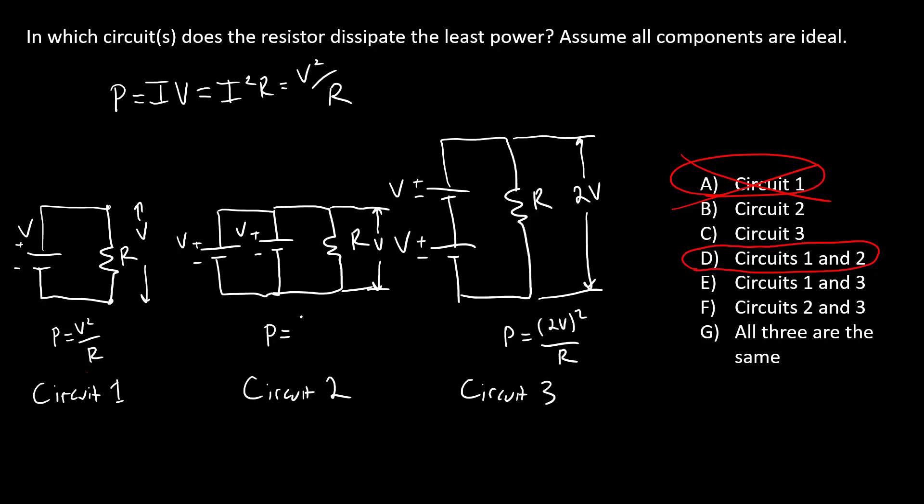The voltage drop across the resistor doesn't change. So the power dissipated by the resistor in this circuit is still just V squared over R, which of course is equal to the power dissipated by the resistor in circuit one, which leads us to the correct answer.